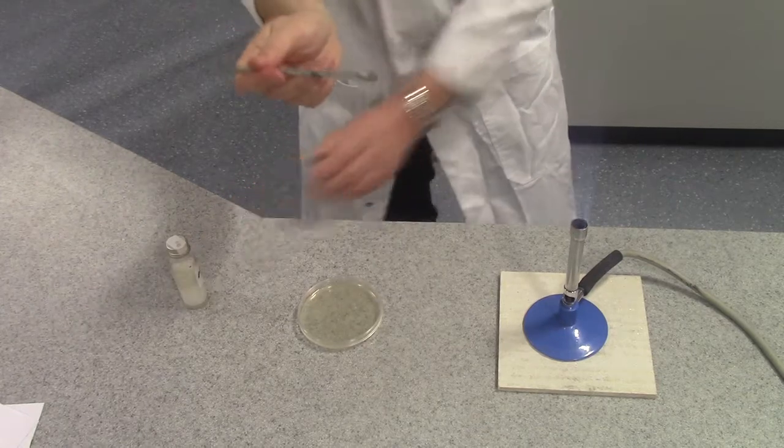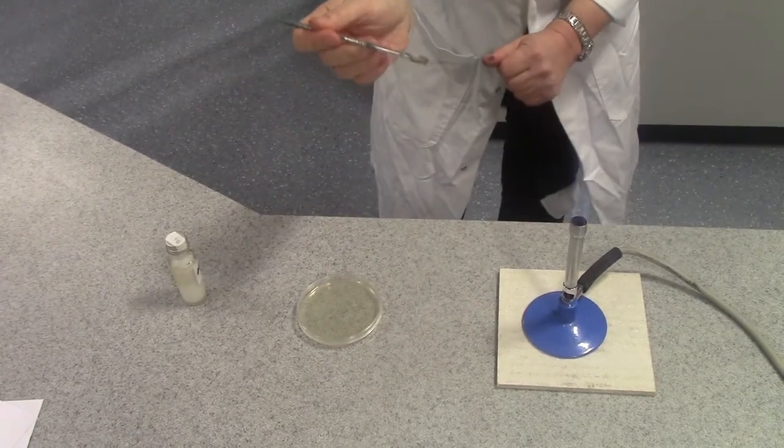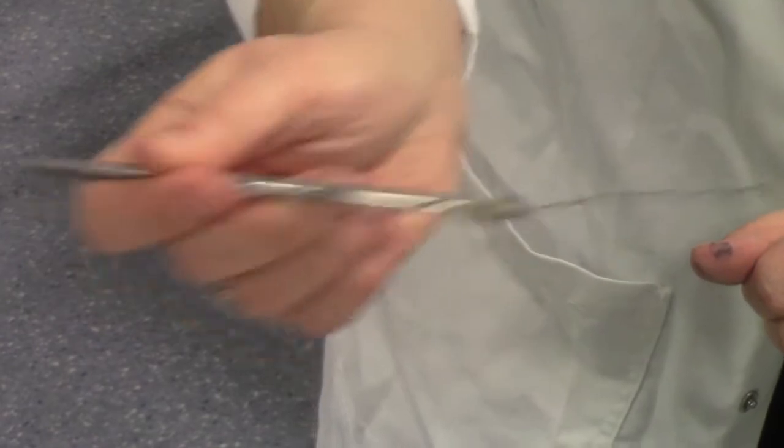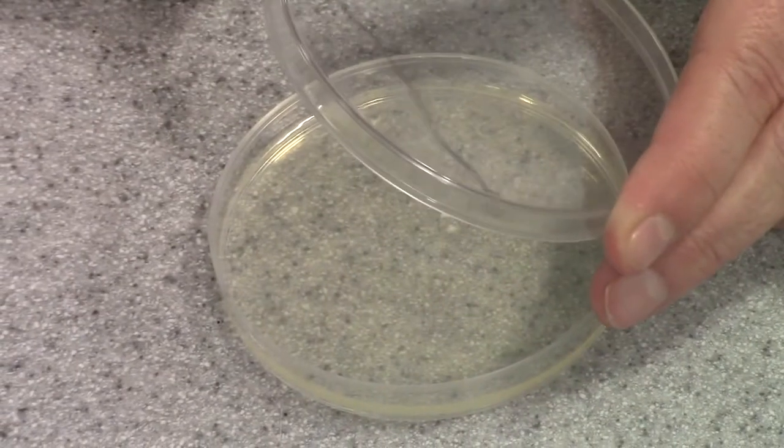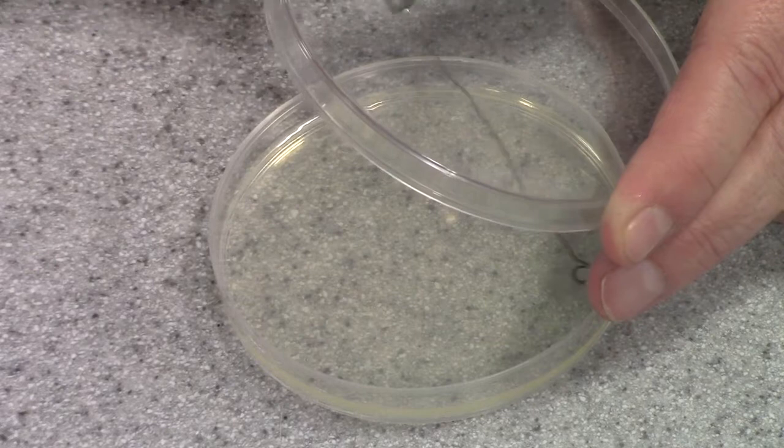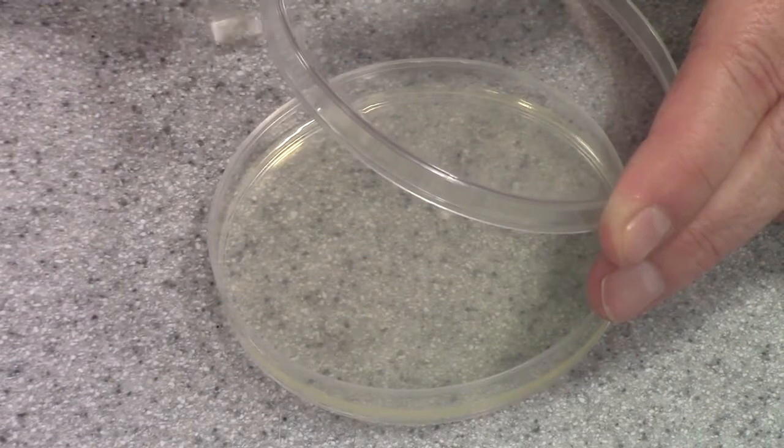We now have a drop of milk on the wire loop, which should contain millions of different types of bacteria, and we're now going to spread them on the plate in a special technique. Start by carefully lifting the lid, and then without pressing, just gently streak the wire loop across the plate side to side.